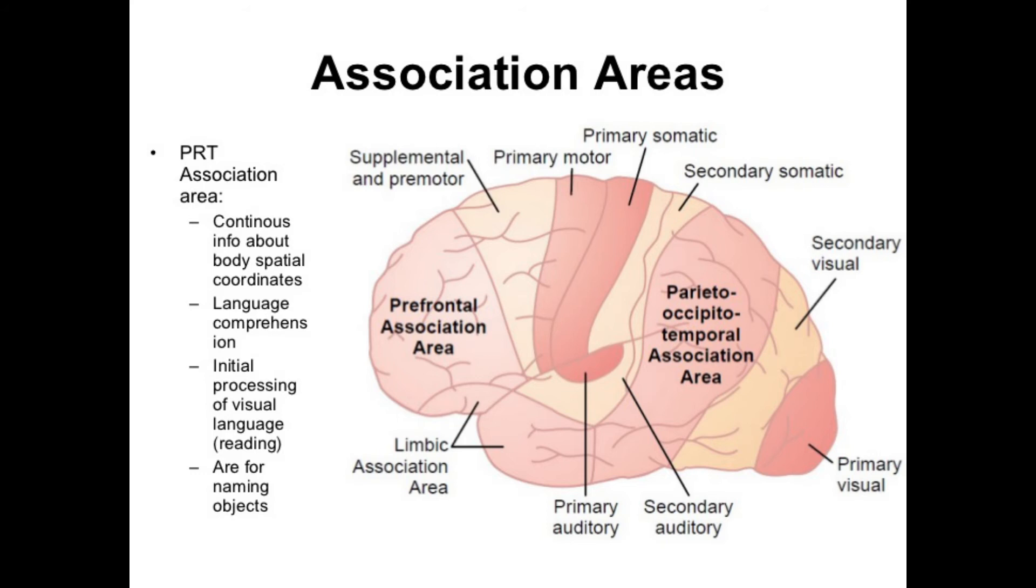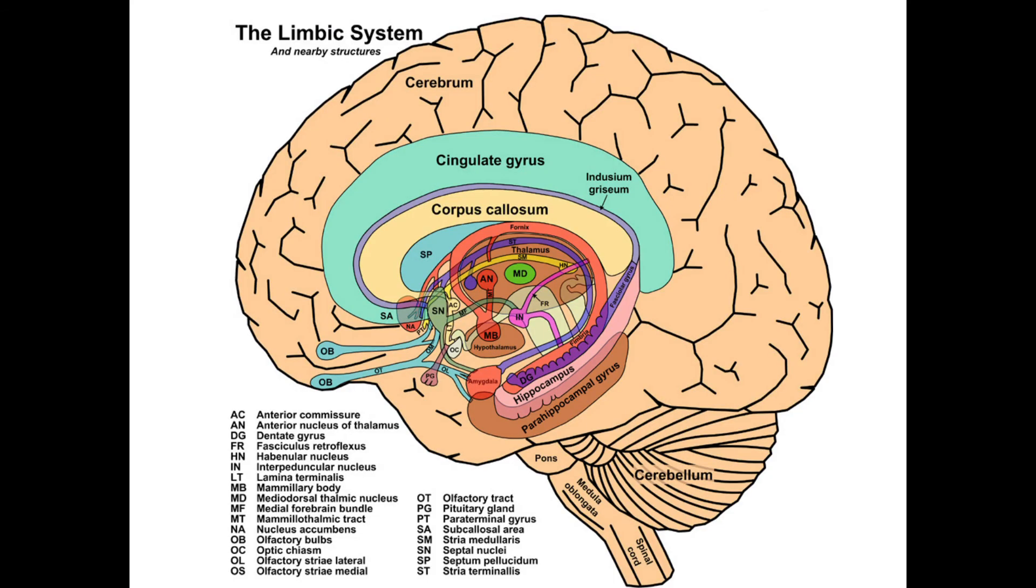Then you have a heteromodal cortex, which combines different sensory information. And finally, he mentioned the paralimbic cortex, which is a very old cortex related more to emotions and fear, for example, anger, which is related to these brain areas.